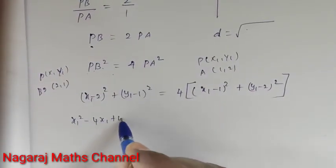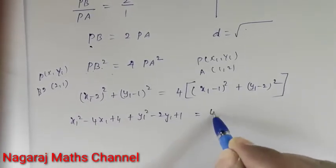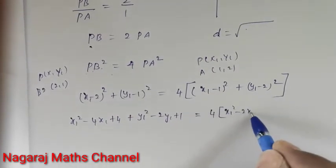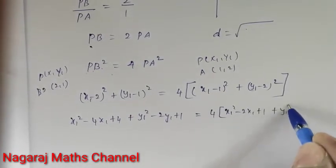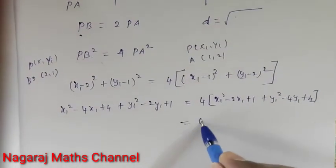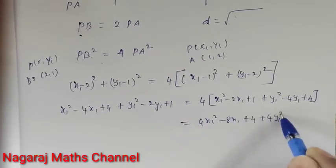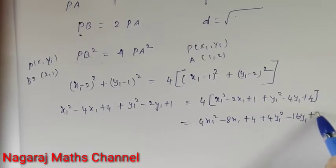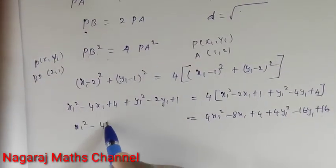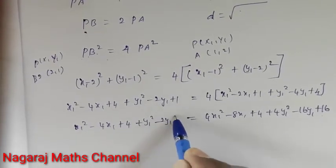Expanding: x1 squared minus 4x1 plus 4 plus y1 squared minus 2y1 plus 1, equals 4 times (x1 squared minus 2x1 plus 1 plus y1 squared minus 4y1 plus 4), which gives y1 plus 16 on simplification. So on the left we have x1 squared minus 4x1 plus 4 plus y1 squared minus 2y1 plus 1.